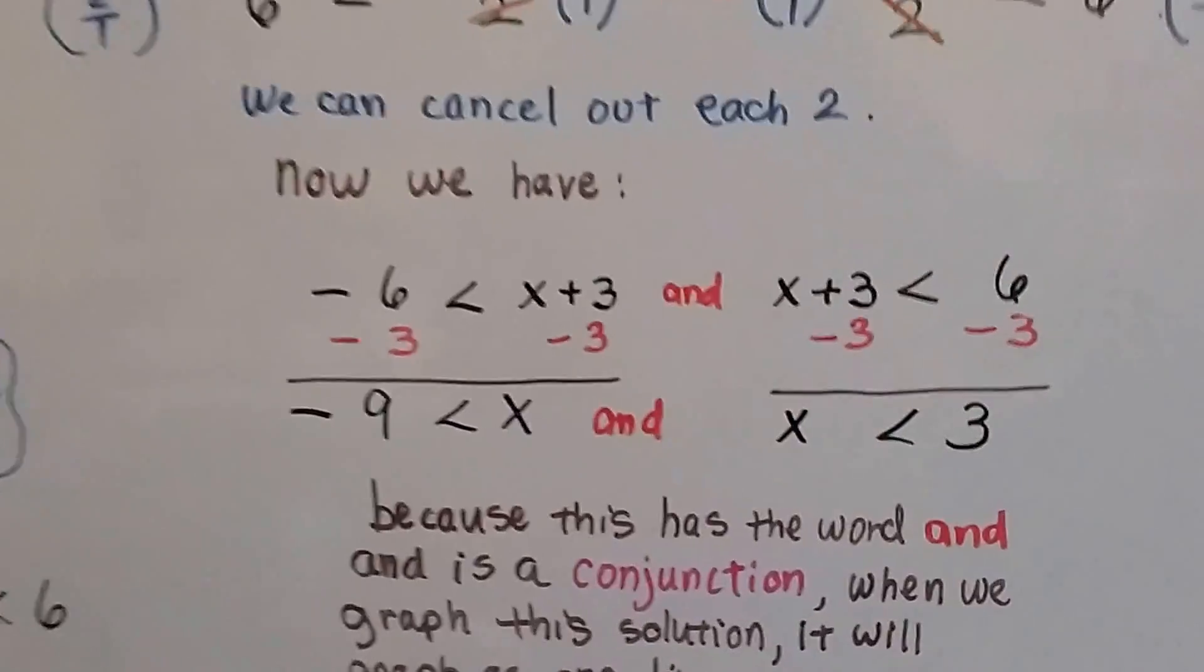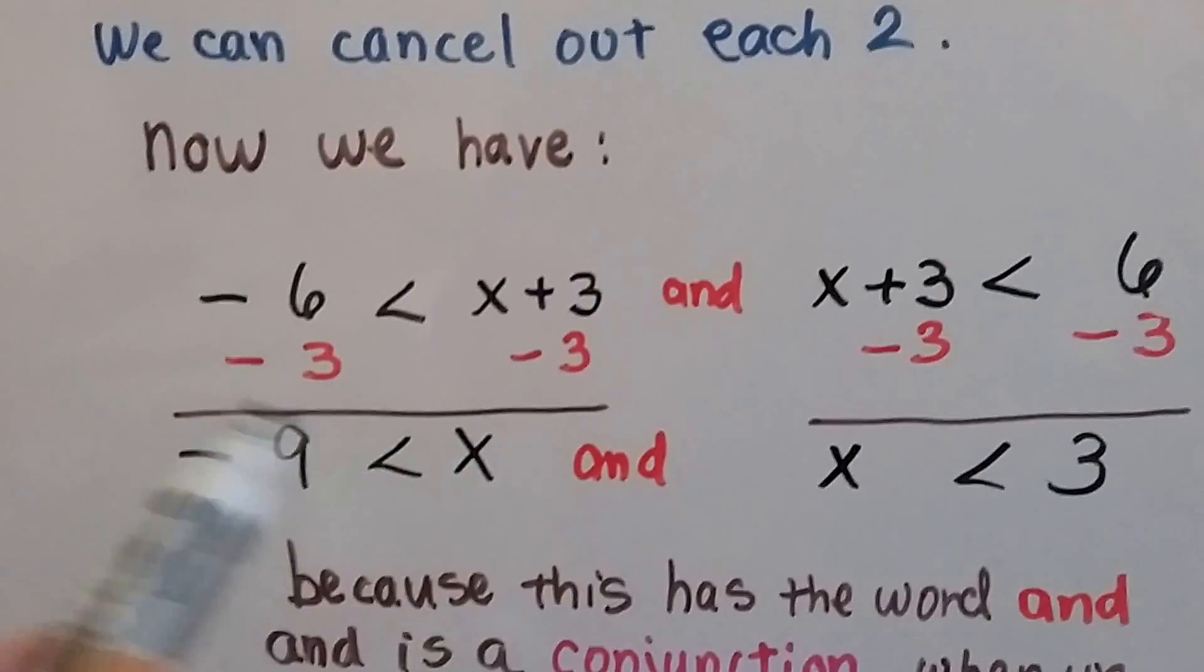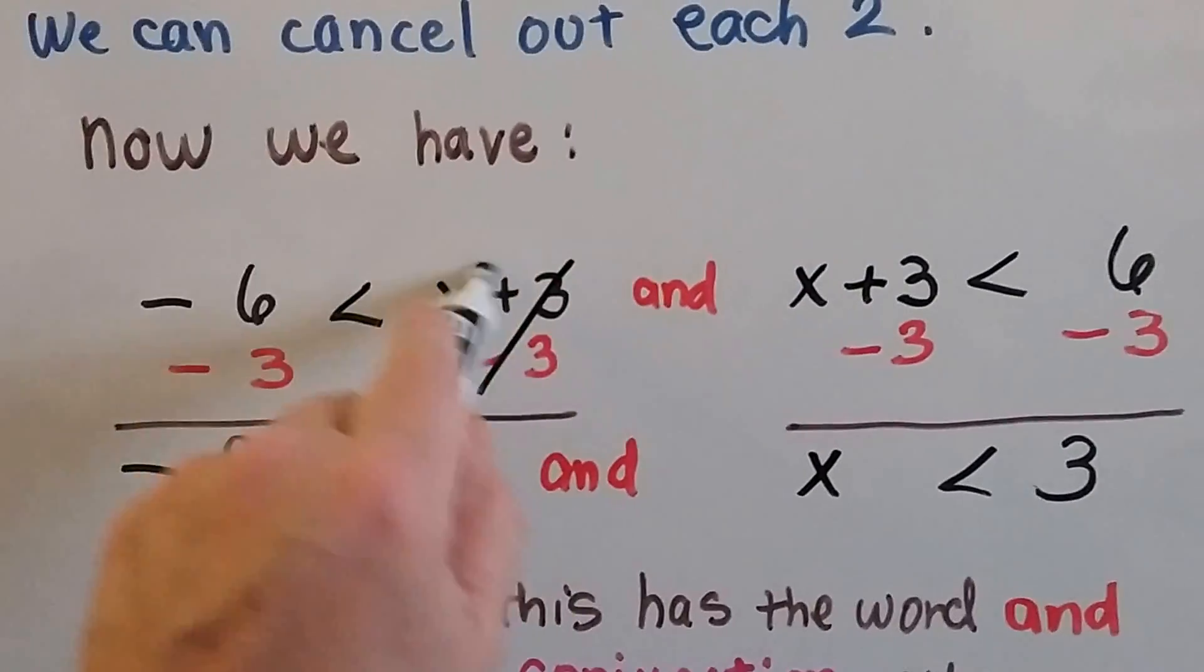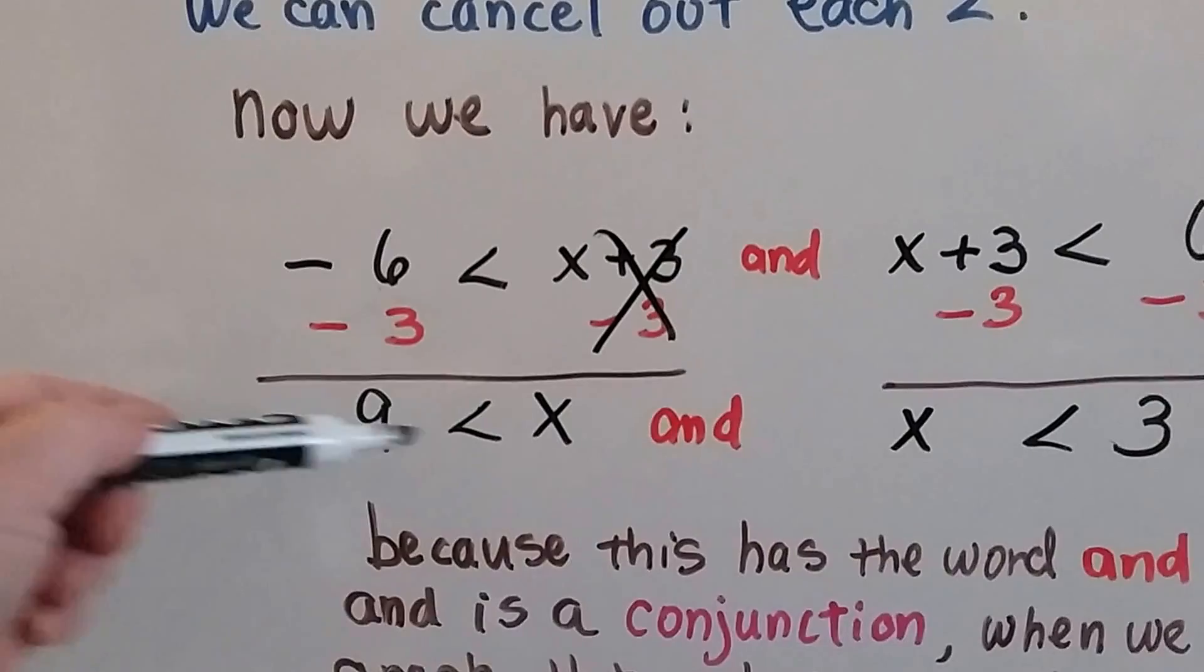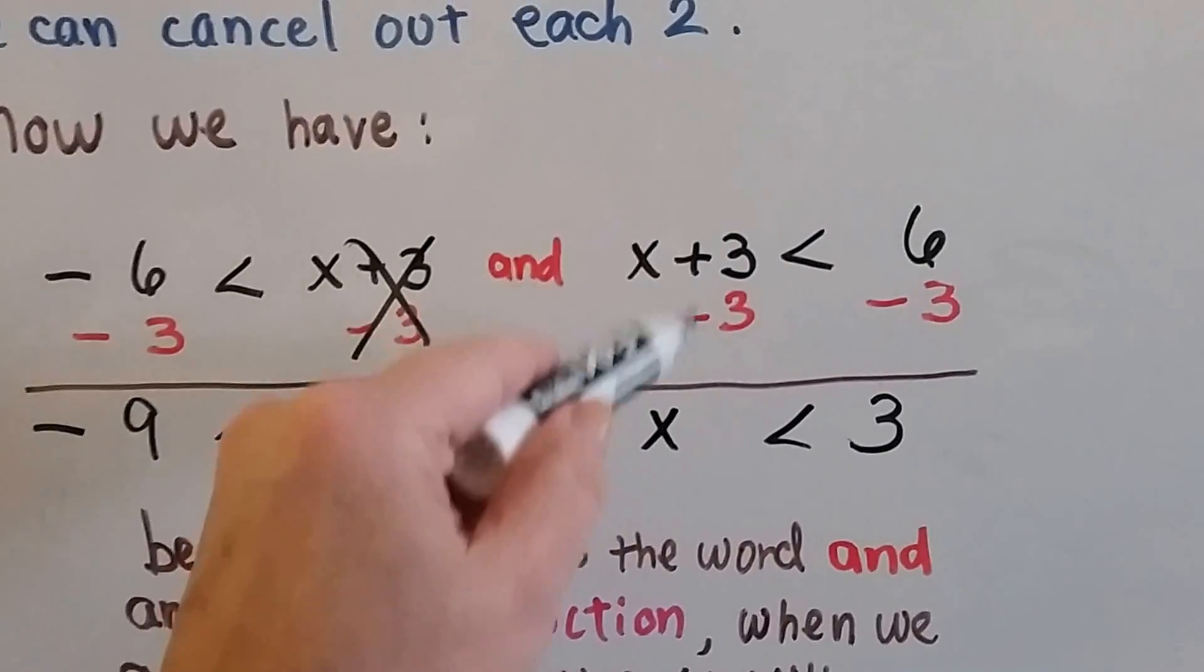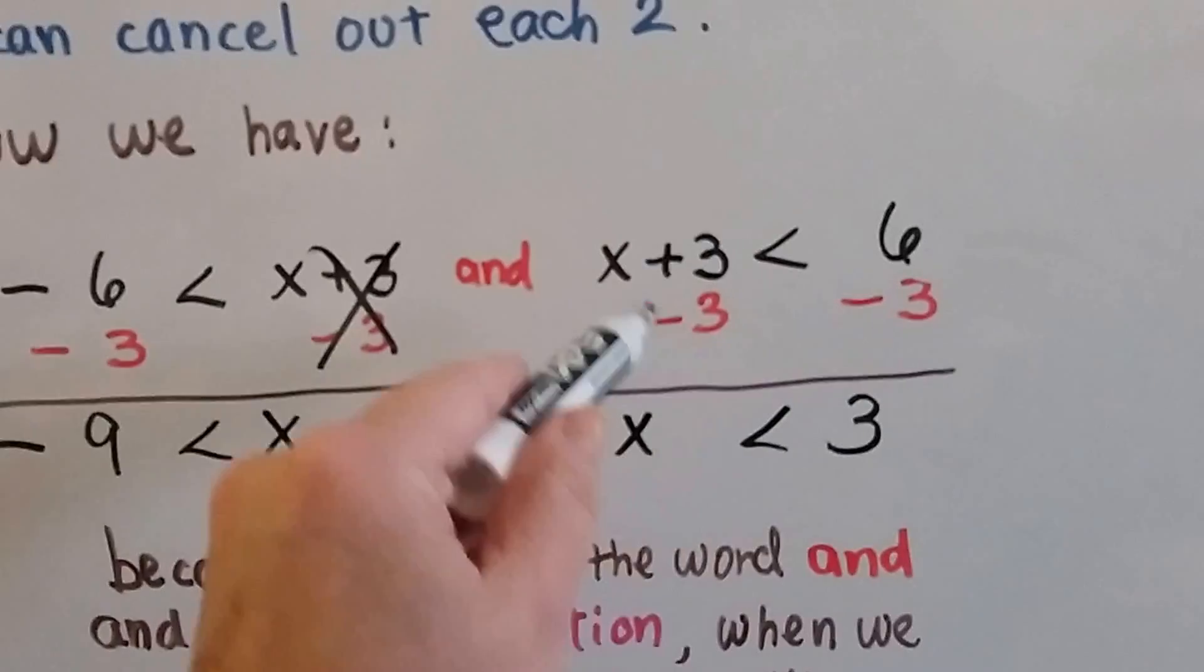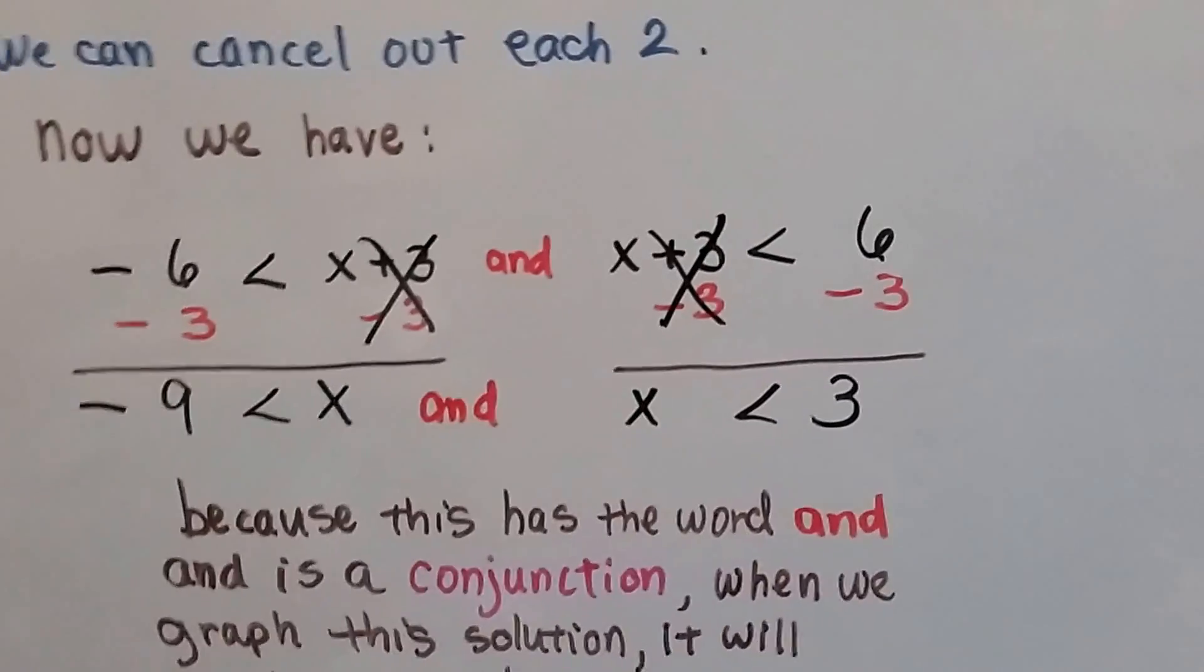I'm going to still do them separately. We see this plus 3 so we know we can subtract 3 from each side and create a zero pair right here. And that's going to give us a negative 9 is less than x, and we have our zero pair here taking away 3 from each side because that plus 3. We isolate the x and we get x is less than 3.